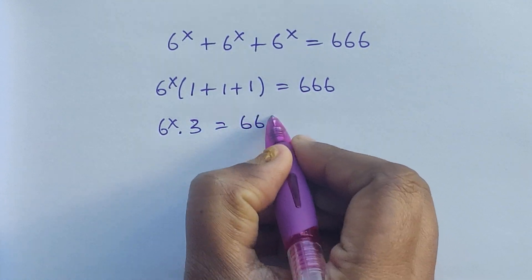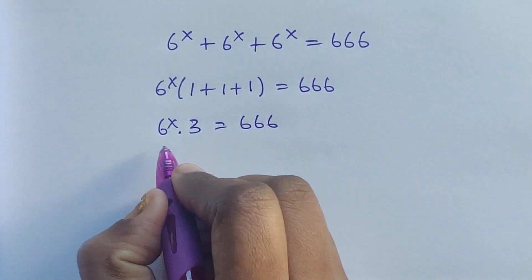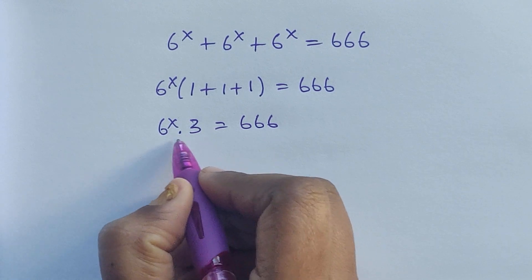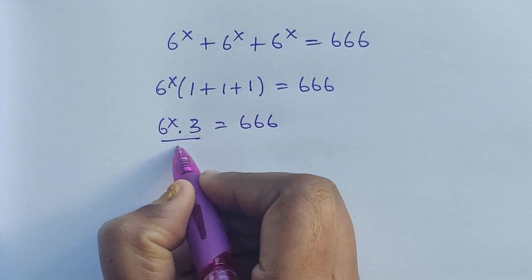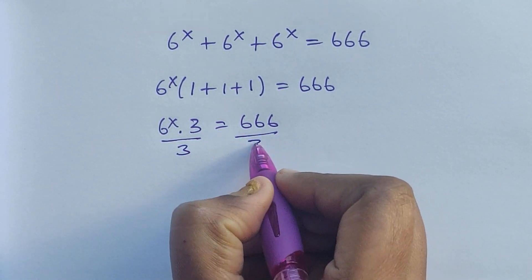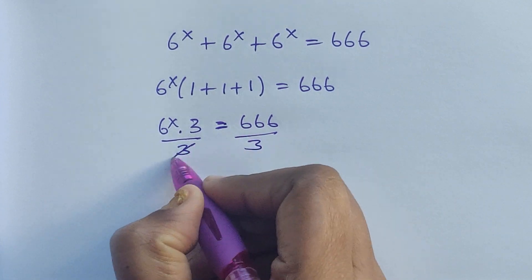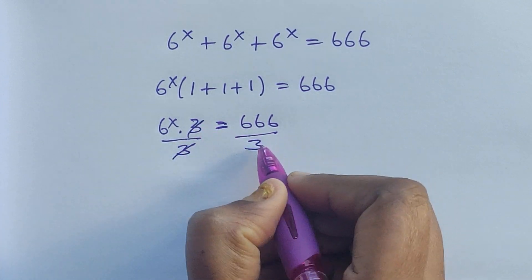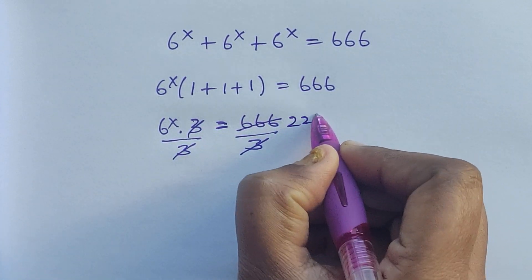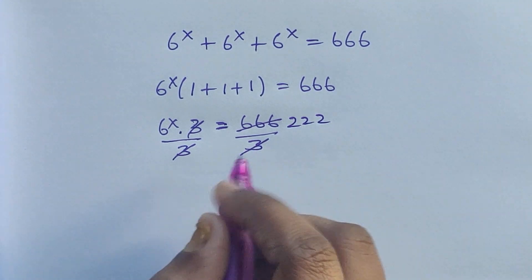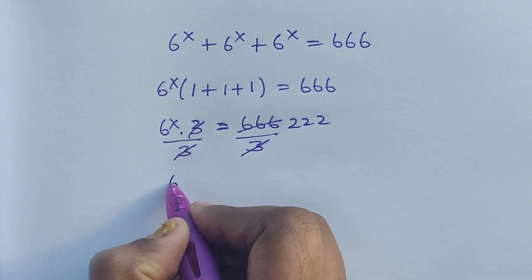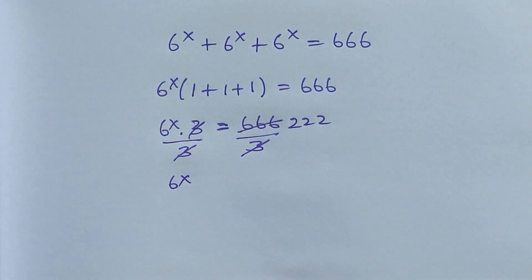So three times six to the power of x equals 666. Here I'm applying divide by three to both sides. Three and three get cancelled, so six to the power of x equals 222.